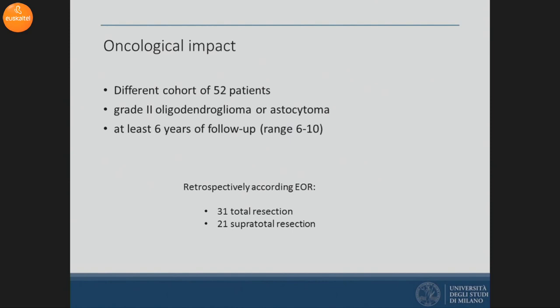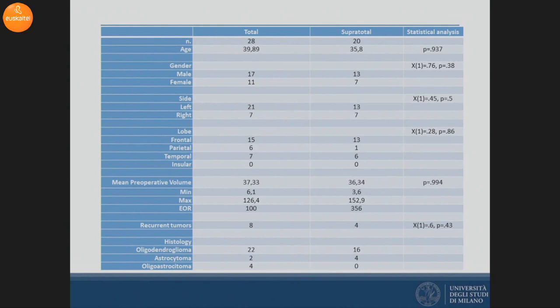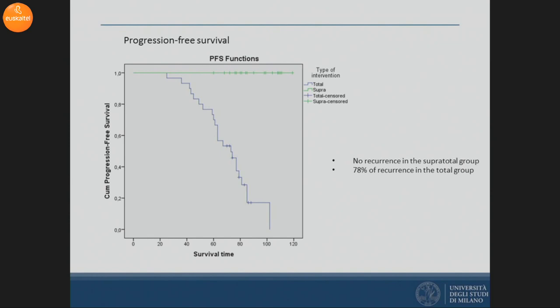Finally, we evaluated the oncological impact in a small sub-cohort — a different cohort requiring long follow-up — of 52 patients with a confirmed diagnosis of oligodendrocytoma grade 2 with at least six years of follow-up. We retrospectively divided them according to extent of resection into two groups, which were comparable for classical demographic and clinical features. Looking at recurrence, we did not observe any recurrence in the supratotal group during follow-up. Obviously it is a quite short follow-up, but it is a beginning.